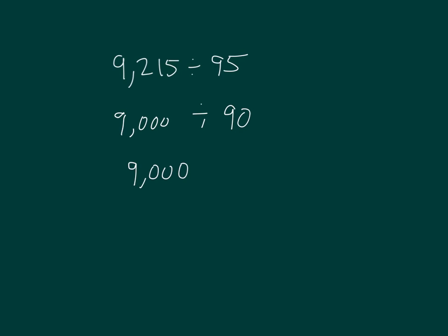That's 9,000 divided by 10, which equals 900, and then 900 divided by 9, because 10 times 9 is 90, which equals 100. So our estimated quotient is 100.